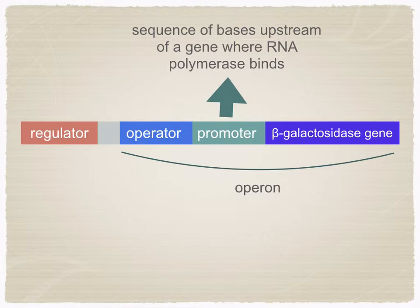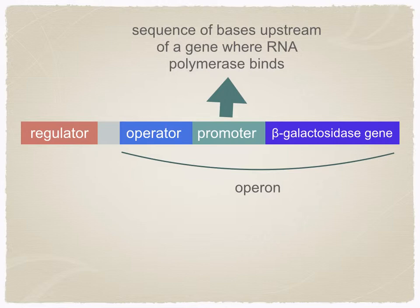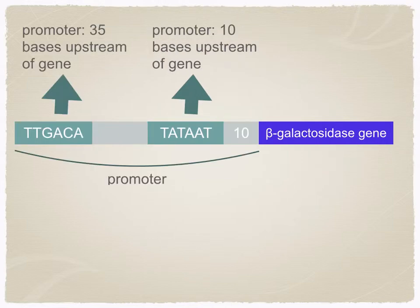Here you can see a section of DNA. An operon is a gene or cluster of genes under the control of a single promoter. It comprises three units: the operator, the promoter, and the gene. The regulator is not part of the operon but it does control the operator. The promoter is a sequence of bases upstream of a gene where RNA polymerase binds. In prokaryotes, the promoter consists of two short sequences that are 10 or 35 base pairs away from the gene.